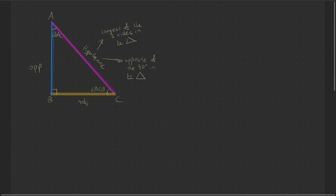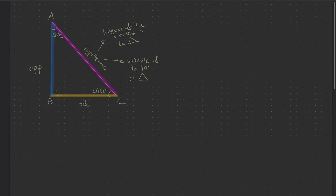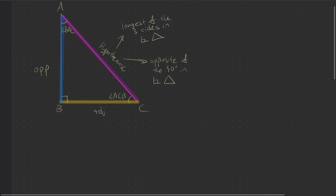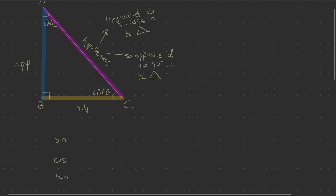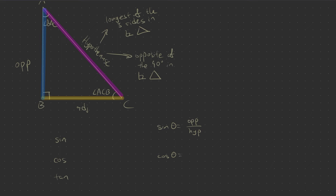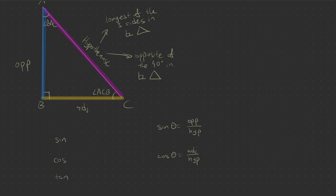So we do have trigonometric ratios for this, so that we can find the angles or the length of the sides. We call them sine, cosine, or tangent. Sine of an angle will equal to the ratio opposite over hypotenuse. Cosine of an angle will equal to the adjacent over the hypotenuse. And for tangent of an angle, it gives you opposite over the adjacent.